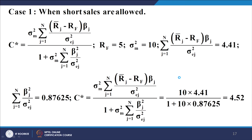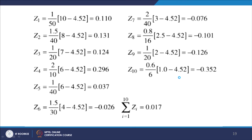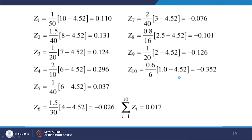Knowing the value of C* = 4.52, we can directly work out the values of Z_1 to Z_10, and knowing those values, we can work out the corresponding X_1, X_2, X_3 up to X_10 using equation number 14. The results are tabulated: for example, Z_1 = β_1/σ_{e1}² · [(R_1 − R_f)/β_1 − C*] where C* = 4.52. Substituting all values for security number 1, Z_1 = 0.110, and similarly all other Z values can be worked out.